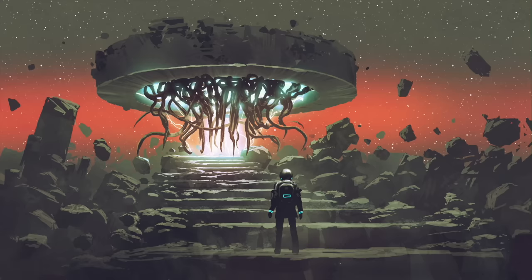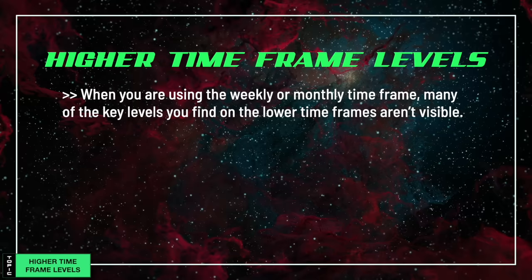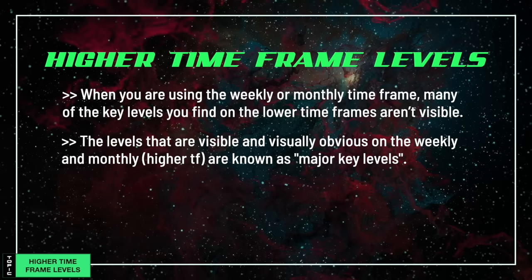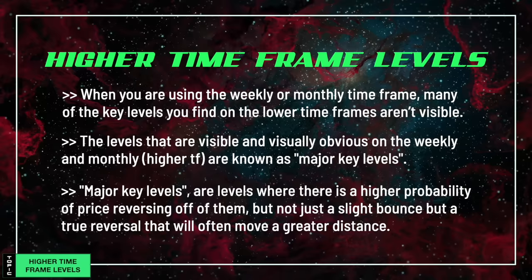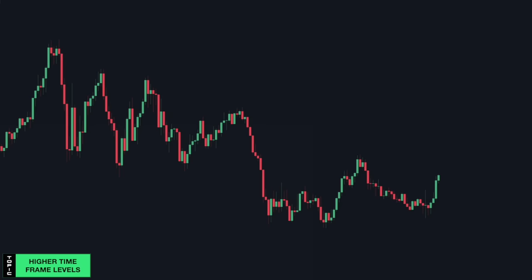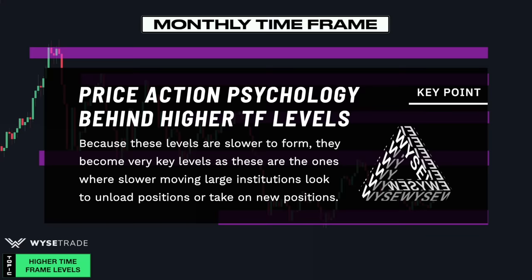Higher timeframe key levels. When you are using the weekly timeframe or monthly timeframe, many of the key levels you find on the lower timeframes aren't visible. But the levels that are visible and visually obvious on the weekly and monthly are known as major key levels, which are levels where there is a higher probability of price reversing off of them — not just a slight bounce, but a true reversal that will often move a greater distance. These levels are slower to form, and they become very key because these are the ones where slower moving large institutions look to unload positions or take on new positions.